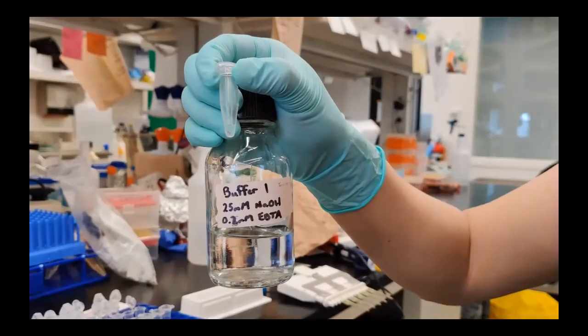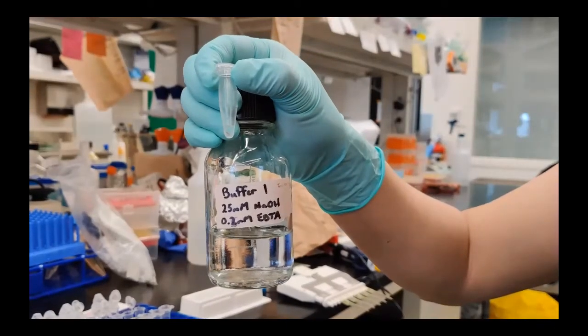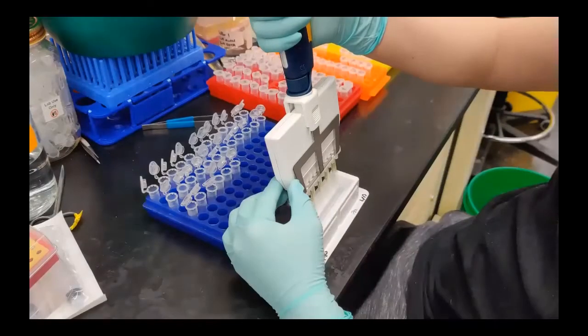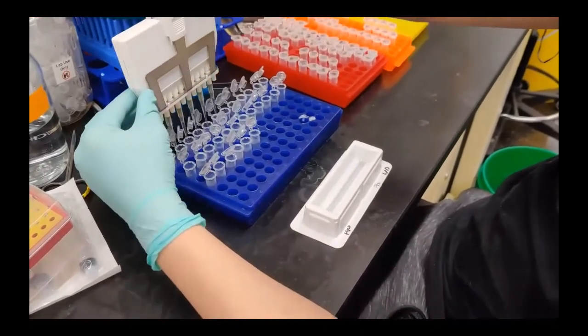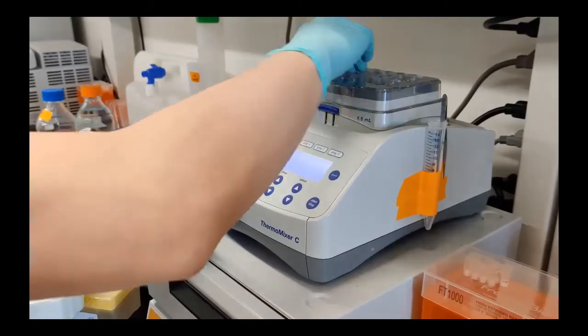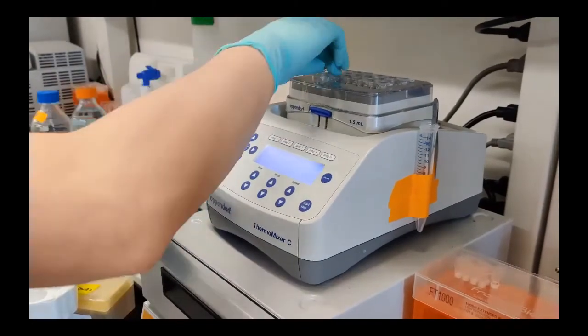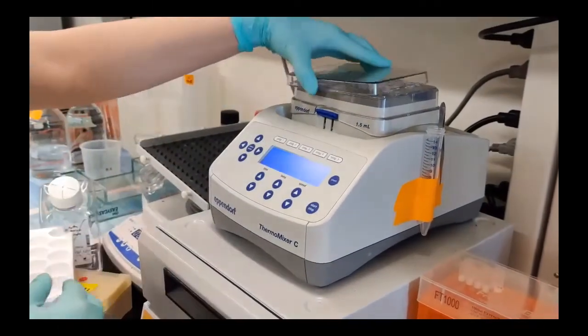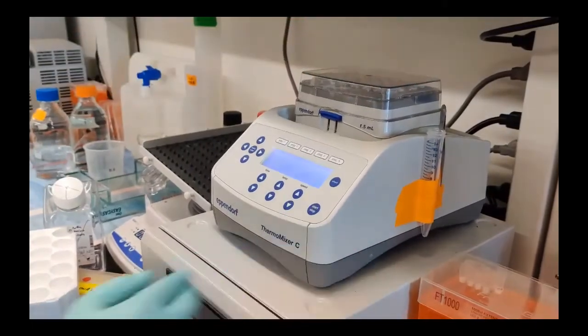First, we add a liquid that has chemicals, which helps break down the cells to release the DNA. We have to add this to all of our samples. Next, we heat up the samples to 95 degrees to help break up the cells and release the DNA.